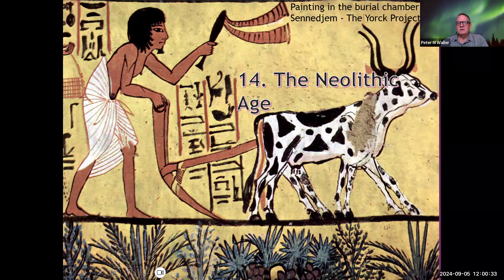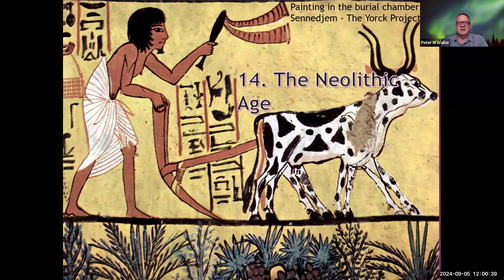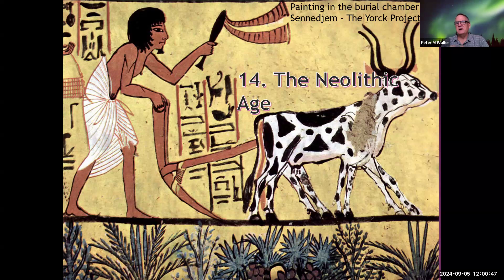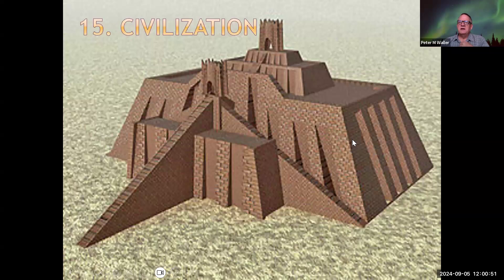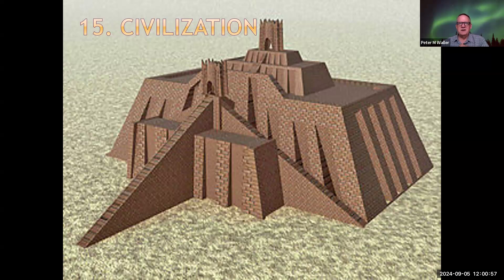The Neolithic began in the Israel/Palestine area and then spread from there — about 10,000 to 12,000 years ago they started farming crops. Then we'll talk about civilization, focusing just on the early civilizations like Egypt, Mesopotamia, and Rome. We won't have time to proceed to the present.